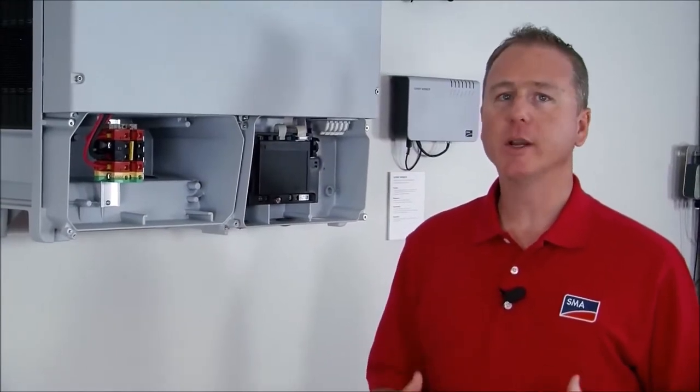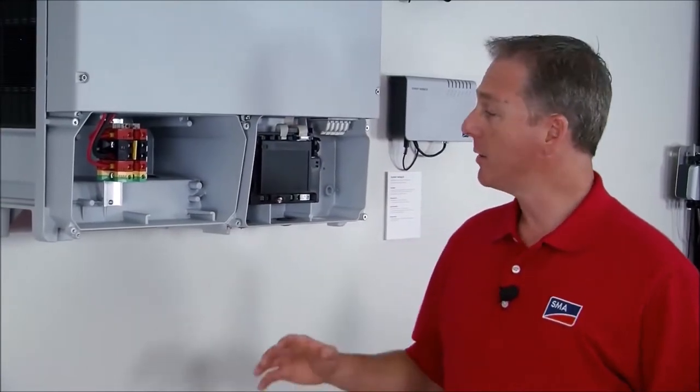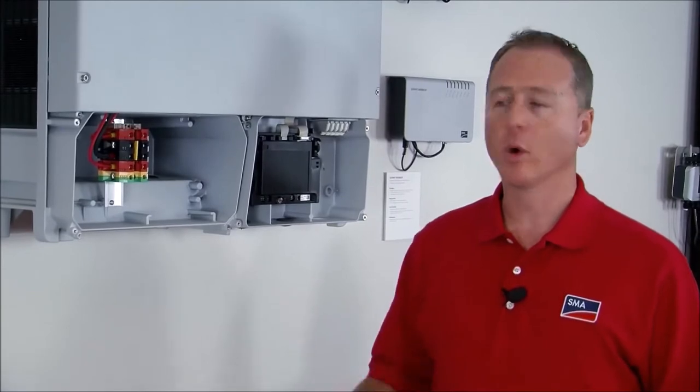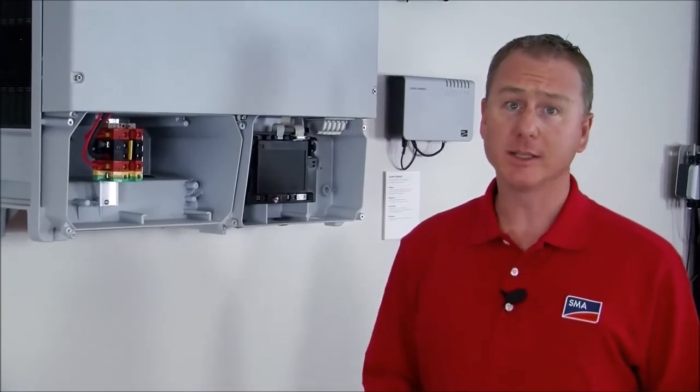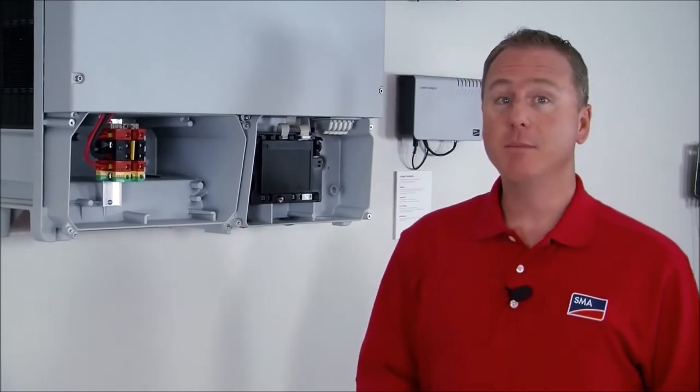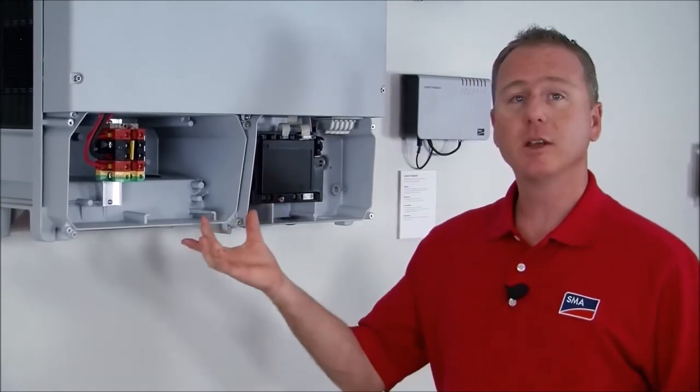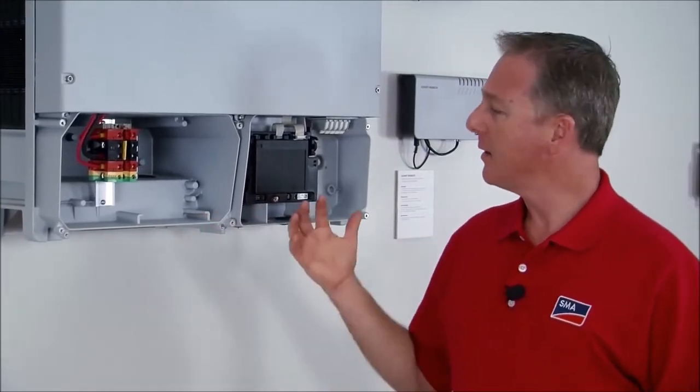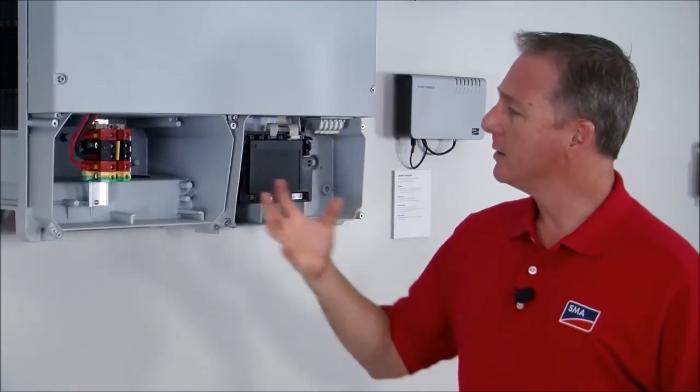The sunny tri-power weighs about 150 pounds so you want to make sure that you use the right mounting hardware for whatever surface it's going to be attached to. It is a two-person lift. Now you'll need a three millimeter hex wrench to take this black cover off and now that we've removed that we can look and inspect the DC terminals and the AC terminals.